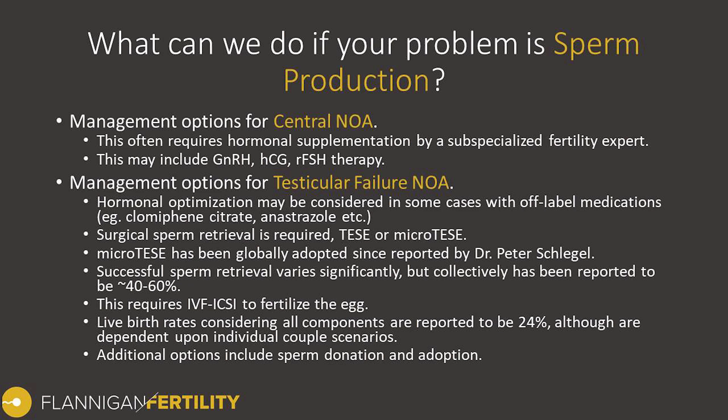However, if the lack of sperm production is due to a testicular problem, we have a few different options. The main stay of treatment here is surgical sperm retrieval. We can perform hormonal optimization to get natural testosterone production into the normal range, though the data is a little conflicting in the current literature. The best globally adopted surgical technique is called microdissection testicular sperm extraction, or micro-TESE for short. This was initially developed and reported by Dr. Peter Schlegel at Weill Cornell in New York, who has been one of my mentors.